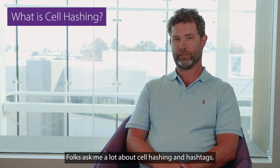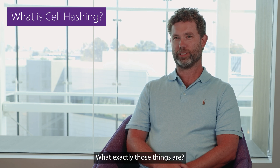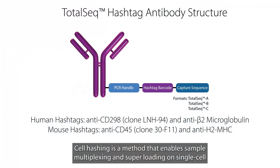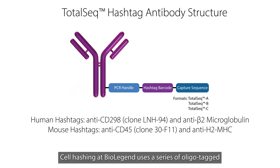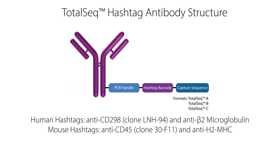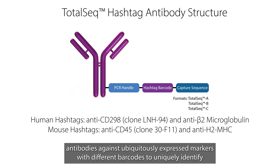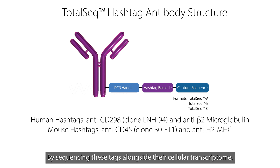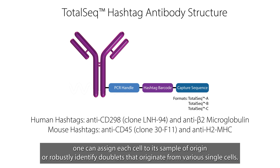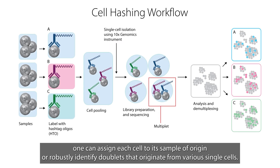Folks ask me a lot about cell hashing and hashtags, what exactly those things are. Cell hashing is a method that enables sample multiplexing and superloading on single cell partitioning platforms. Cell hashing in BioLegend uses a series of oligo tag antibodies against ubiquitously expressed markers with different barcodes to uniquely identify cells from various sample sets. By sequencing these tags alongside their cellular transcriptome, one can assign each cell to its sample of origin and robustly identify doublets that originate from various sample sets.